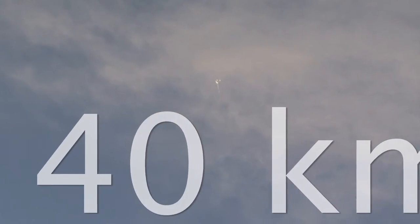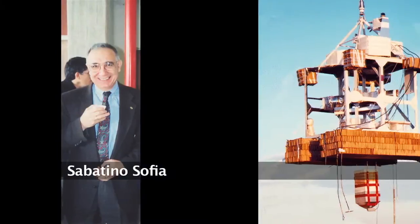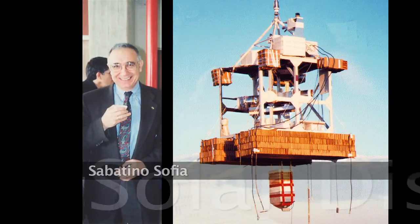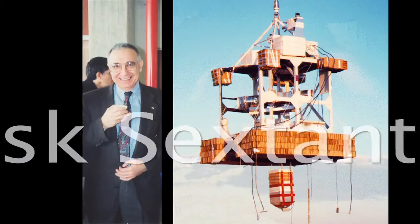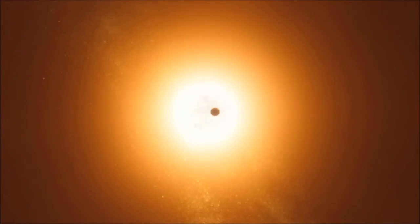In parallel to that, the first measures taken by balloon are made from 40 km in altitude on the impulse of Sabatino Sofia with a specific instrument, the Solar Disk Sextant. It shows values varying from 3 to 7 km. The origin of this research appeared just before the 19th century.